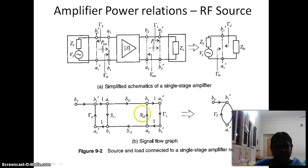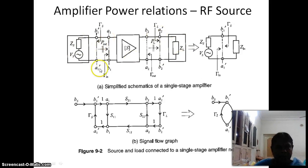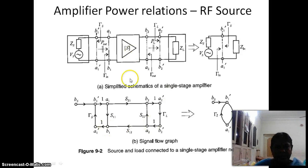This diagram shows source and load connected to a single-stage amplifier network. The amplifier is connected between the source and the load. The source voltage is VS and the output impedance is ZL. The ports are A1, B1 at the input and A2, B2 at the output. This diagram also shows the equivalent signal flow graph.